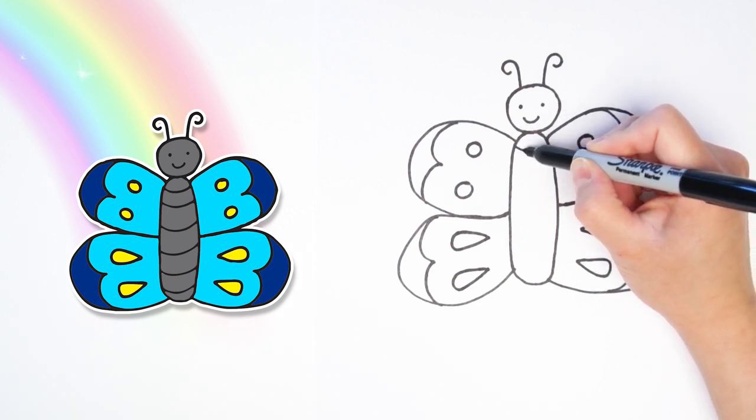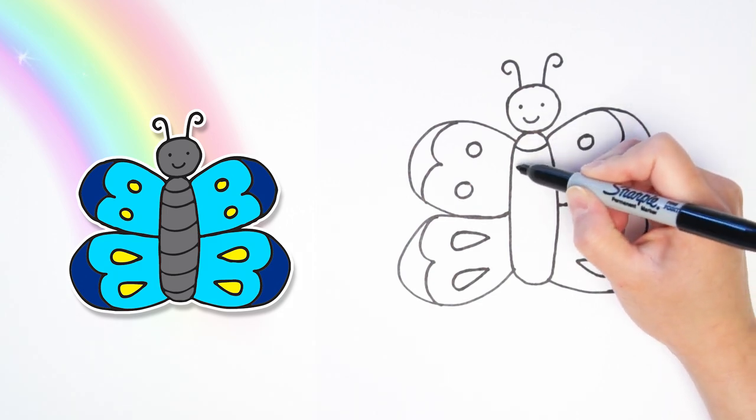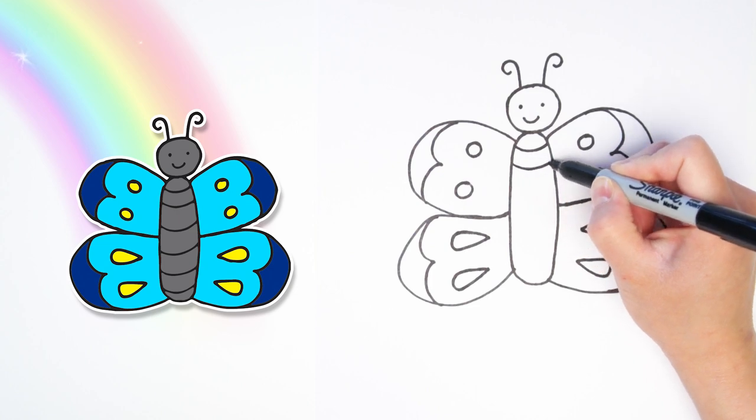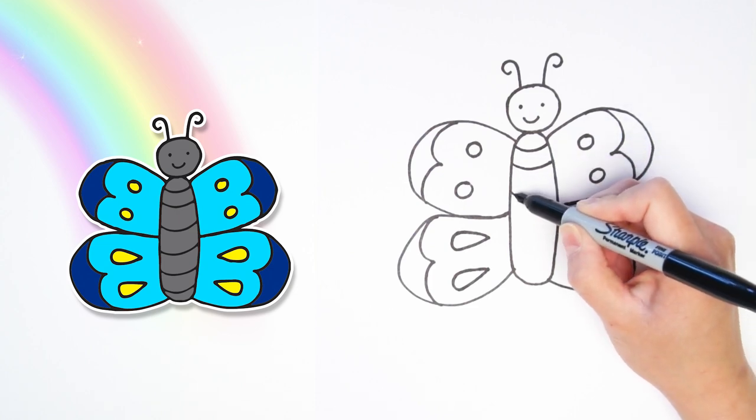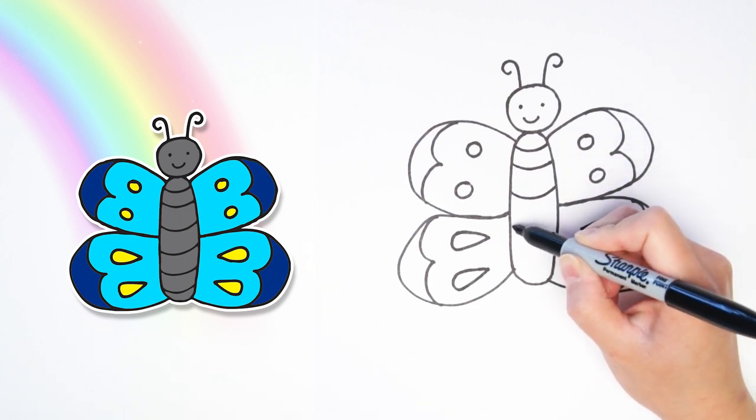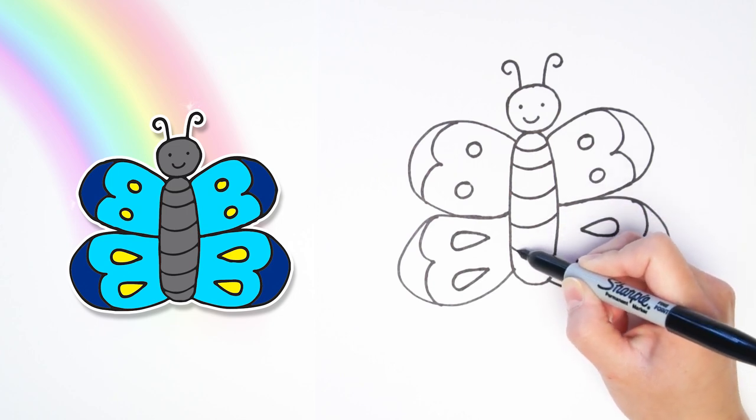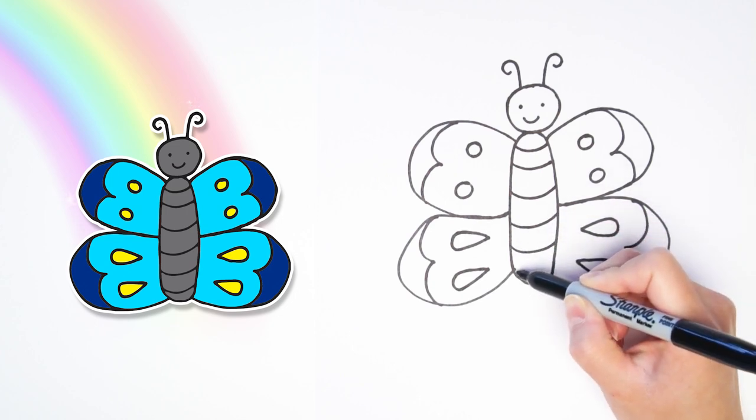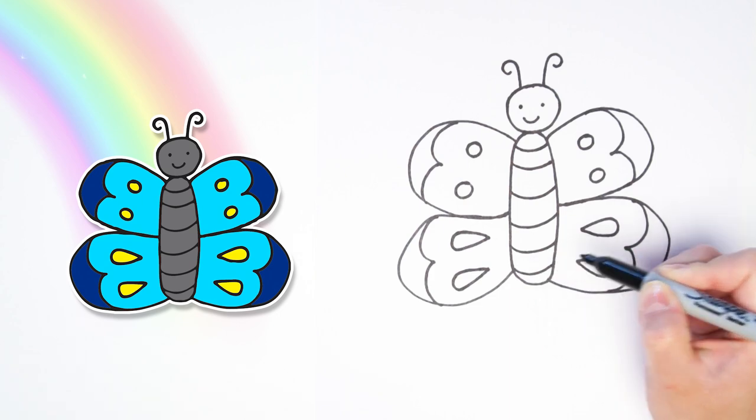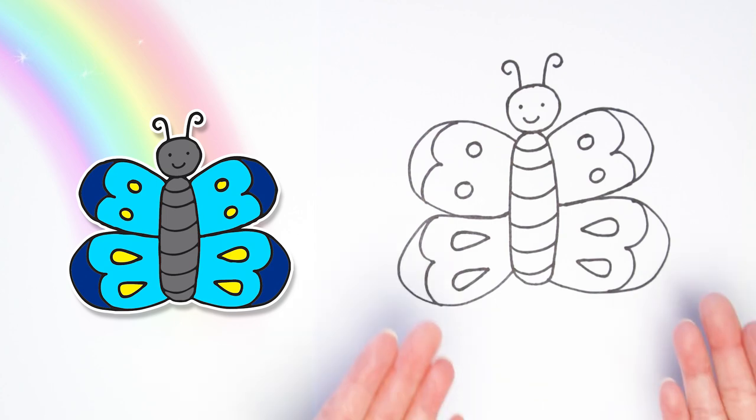Now, let's decorate the inside of the body with these curved lines. Just a couple lines spaced apart, going all the way down. There we go! Our butterfly is all drawn. Good job guys!